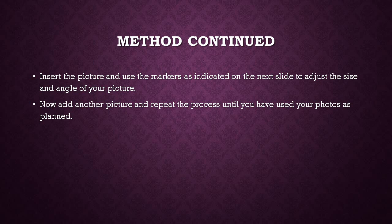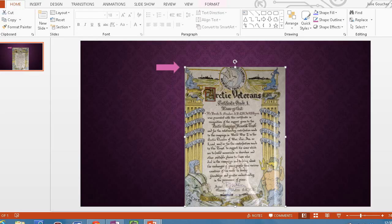Once you've done that with one picture, simply repeat the process until all the pictures you want to use are in fact used. As you put your pictures into the collage, they may come in quite large and may overlap — that doesn't matter. When you use the little markers, you'll be able to adjust the shape and size. You can see where I've put an arrow indicating the little markers you can use to control the size and shape.